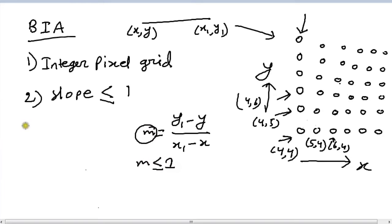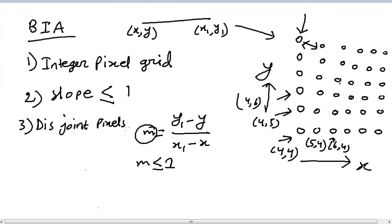The third and final condition is that each and every pixel of the pixel grid has to be disjoint — that is to say, no two pixels can overlap by any means. These are the three conditions we need to satisfy in order to use the BIA algorithm.